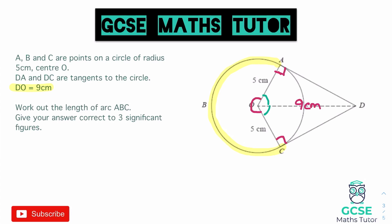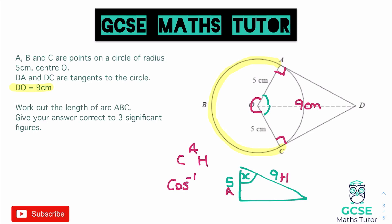To find that angle within the right-angle triangle we use SOH-CAH-TOA. The hypotenuse is 9 centimetres and the adjacent side is 5 centimetres, so we use cosine — CAH. We need cos⁻¹(adjacent over hypotenuse), which is cos⁻¹(5/9). Typing that into the calculator gives us 56.2510114 degrees. That is the angle at the centre for one of those triangles.